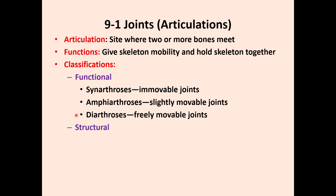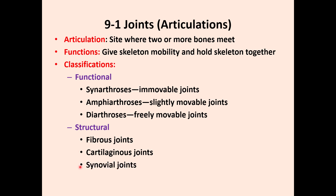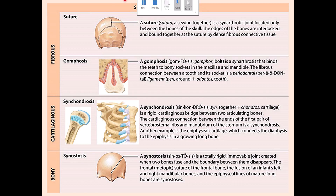Structurally, joints are divided into fibrous joints, which have collagenous fibers; cartilaginous joints, which involve hyaline cartilage or fibrocartilage; and synovial joints, which are very mobile and are primarily made of hyaline cartilage, though they may also have fibrocartilage. This classification of joints is very important to know.